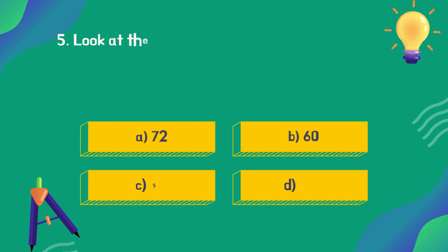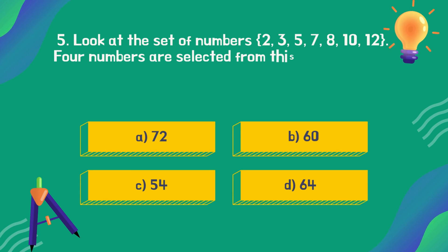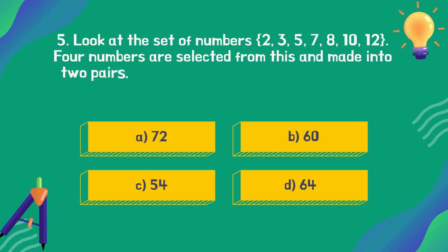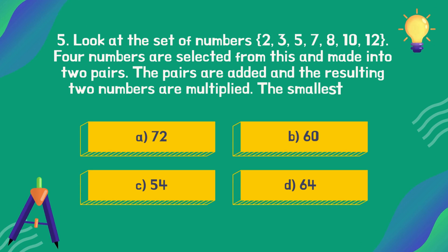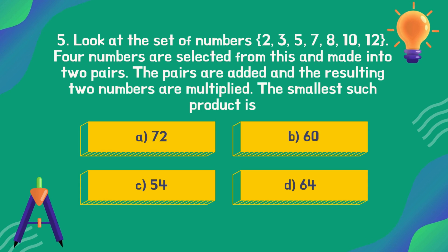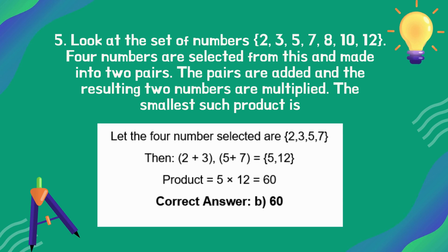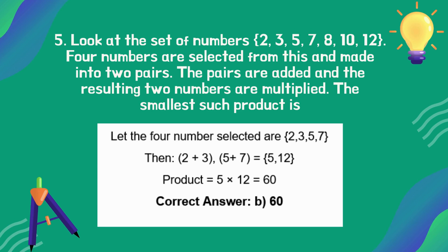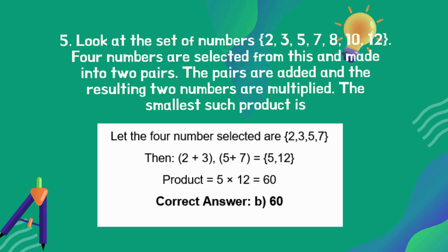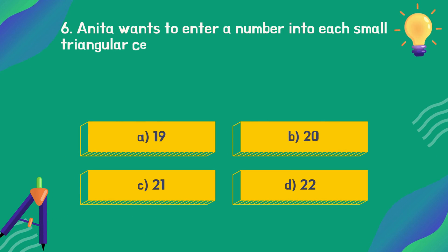Look at the set of numbers: 2, 3, 5, 7, 8, 10, 12. Four numbers are selected from this set and made into two pairs. The pairs are added and the resulting two numbers are multiplied. What is the smallest such product? The correct answer is option B: 60.